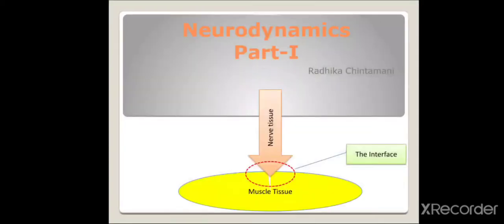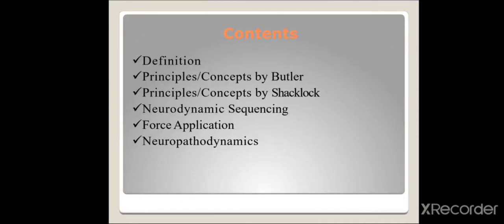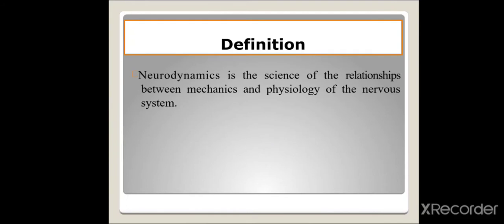Good morning everyone. Today we'll be dealing with neurodynamics. Neurodynamics is the relationship between the mechanical part of the nervous system and its physiological part — that is, neural blood supply and physical elasticity properties. The contents we'll cover include the definition, principles given by Butler, principles given by Shacklock, neurodynamic sequencing, force application, and neuropathodynamics.